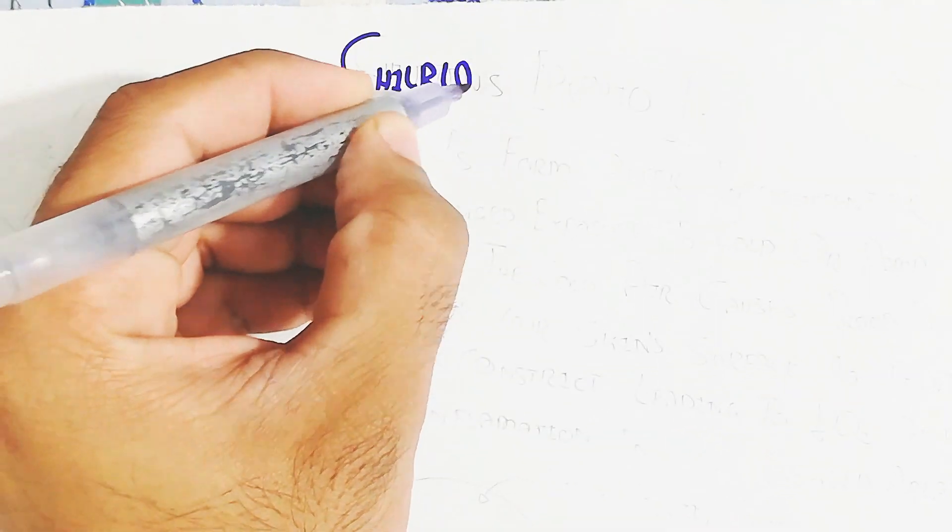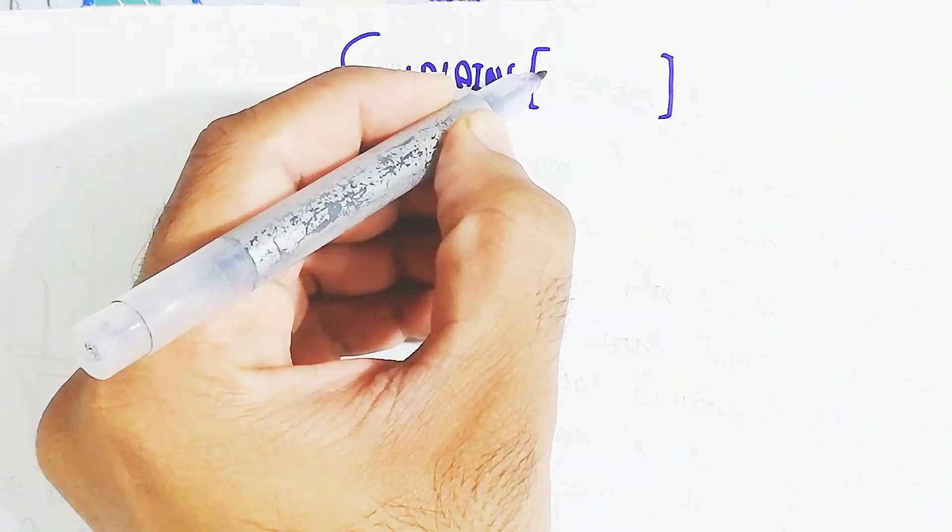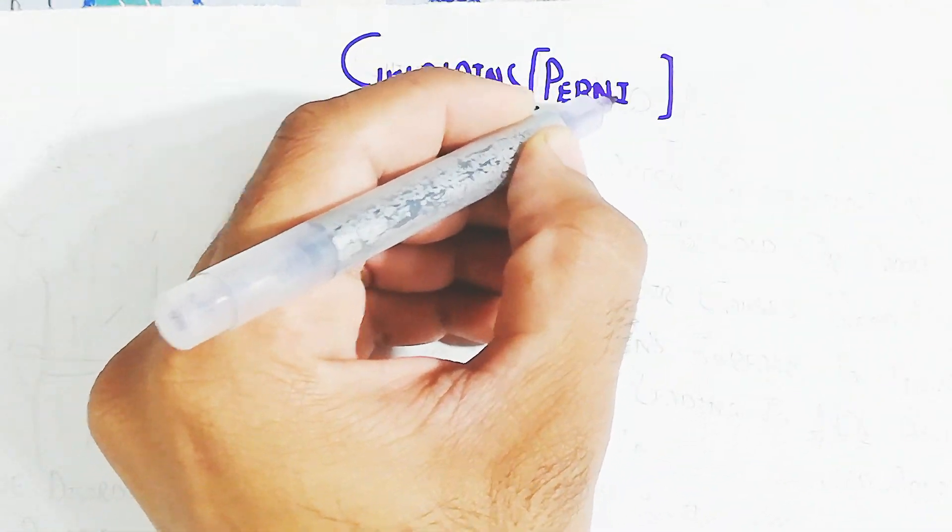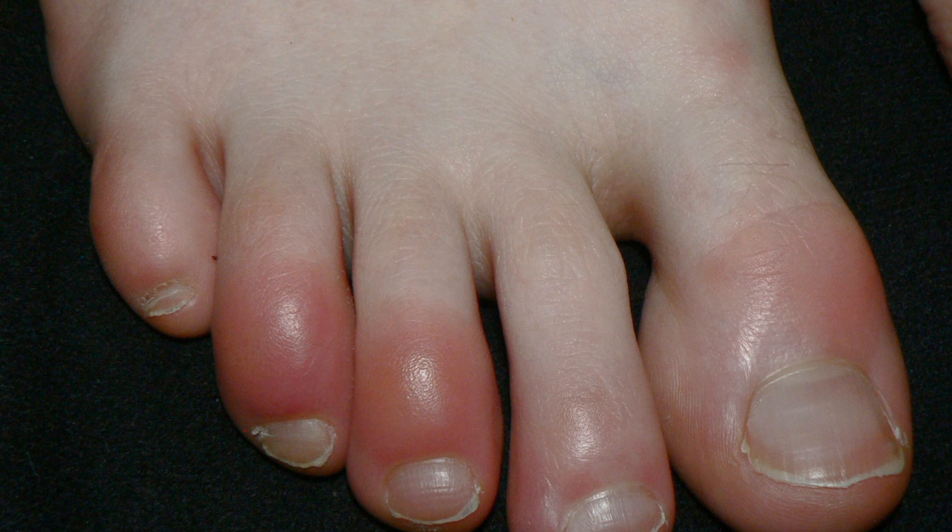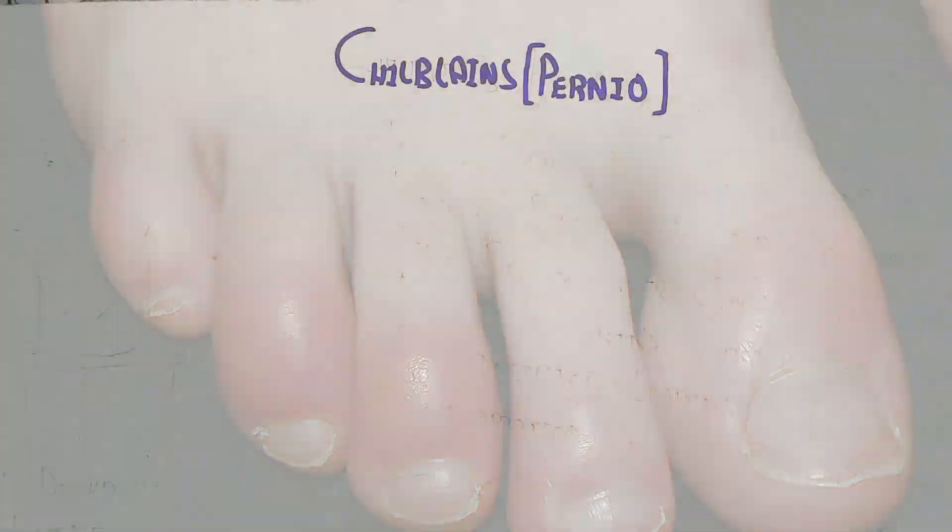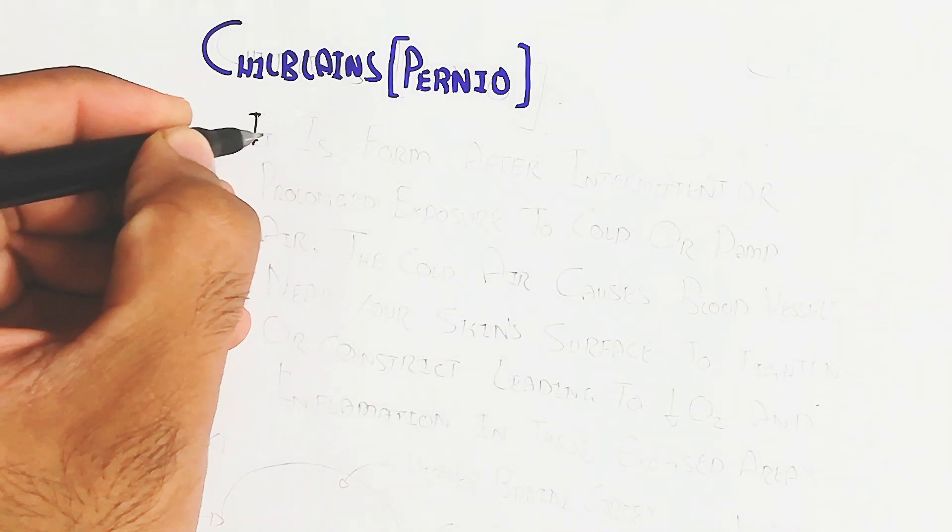Hello, in this video we will understand about Chilblains. This is known as Pernio or Perniosis. This is a symptom on the skin that arises due to cold weather exposure and will lead to skin damage.